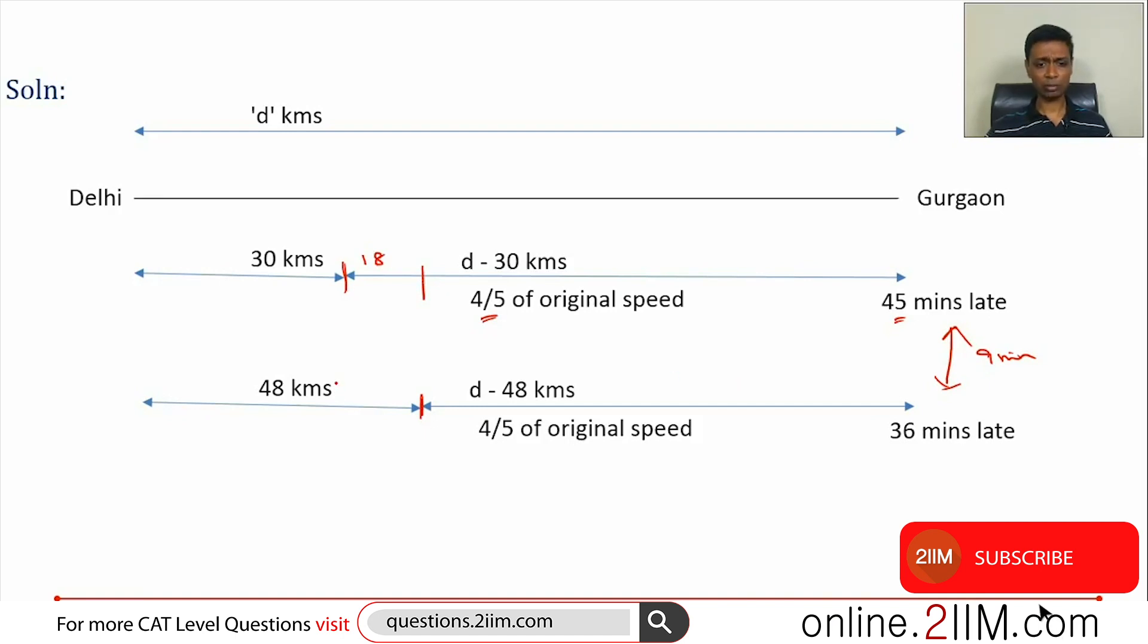The first 30 kilometers in both cases, he travels at the original speed. It will take the same time. The last d-48 in both cases, he travels at the same reduced speed. It will take the same time. So the entire difference is going to come from this 18 kilometers. In this case, this 18 kilometers, he travels at a reduced speed. In this case, he travels at the original speed. Assume initial speed, original speed equals x kilometers per hour.